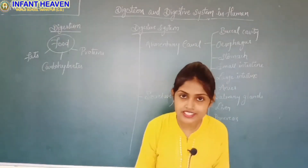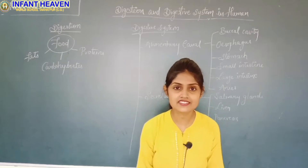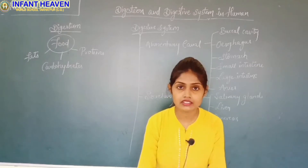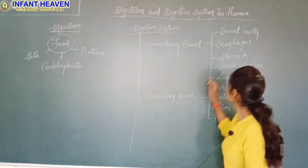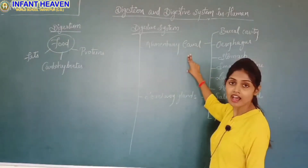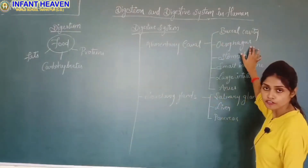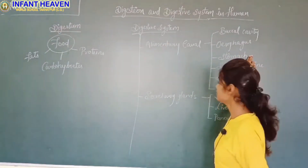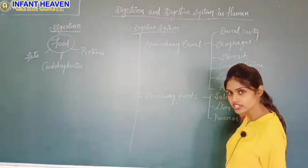Let us understand in more detail with the digestive system. As we know, the digestive system consists of different organs but it is divided into two main parts: the alimentary canal and secretory glands. The alimentary canal consists of the buccal cavity, that is the mouth and nostril, the esophagus — a long food pipe — the stomach — a sac-like structure — the small intestine, the large intestine, and the anus as the last part of the alimentary canal.